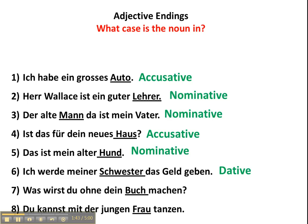Was wirst du ohne dein Buch machen? This is accusative because of the accusative preposition ohne. The accusative prepositions are basically durch, für, gegen, ohne, um. Nummer 8: Du kannst mit der jungen Frau tanzen. Mit is a dative preposition, thus making Frau dative.